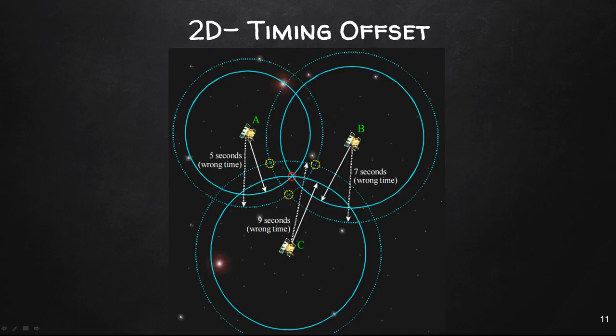When the receiver gets a series of measurements that cannot intersect at a single point, it finds the adjustment to all the measurements and lets the range go through one point. In this example, subtracting 1 second from the three measurements makes the circles intersect at this point, highlighted by the red circle in the middle of the diagram.